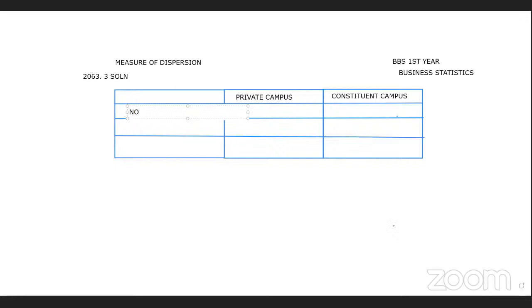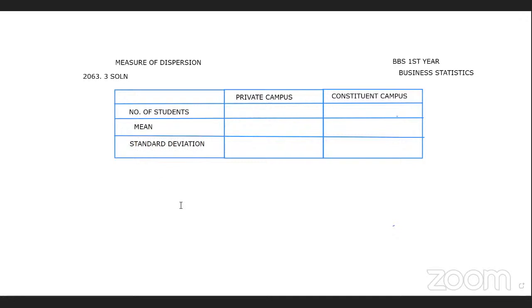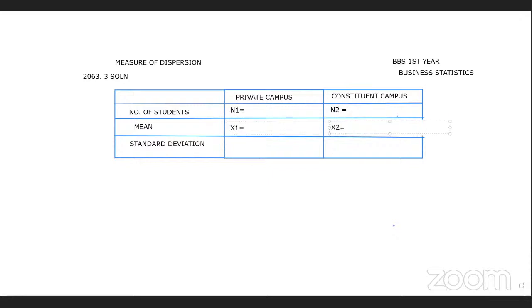The table has the following columns: number of students, mean (x-bar), and standard deviation (SD). We will label them SD1 and SD2 for the two groups respectively.